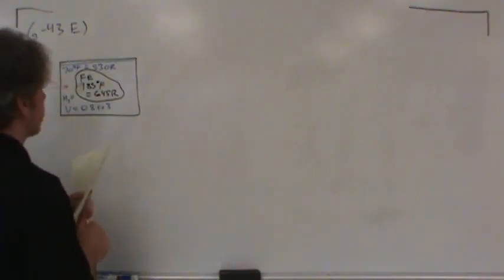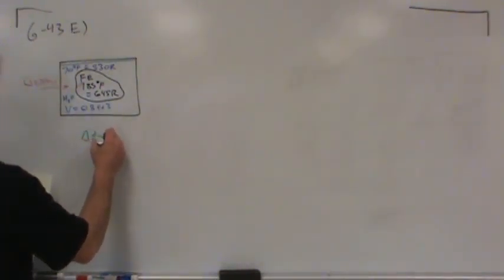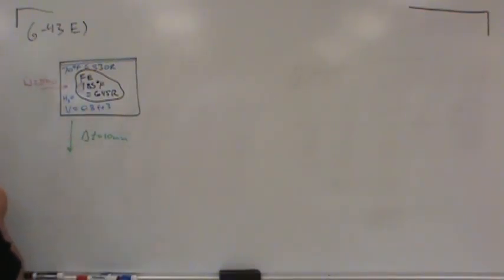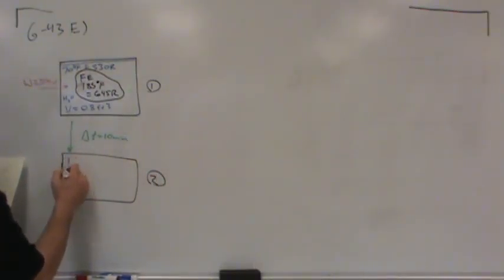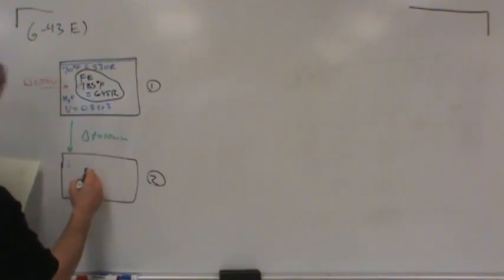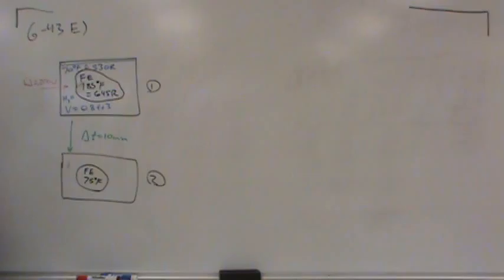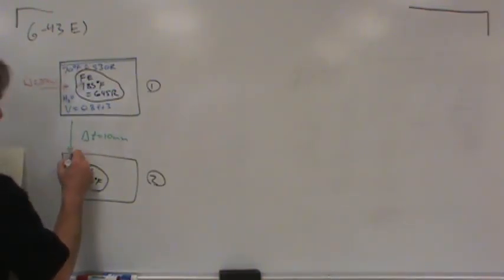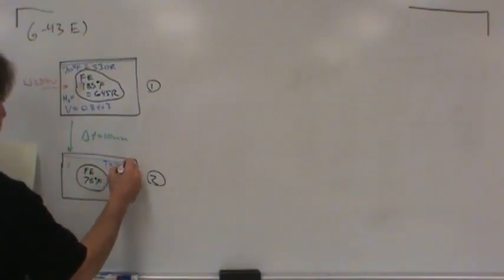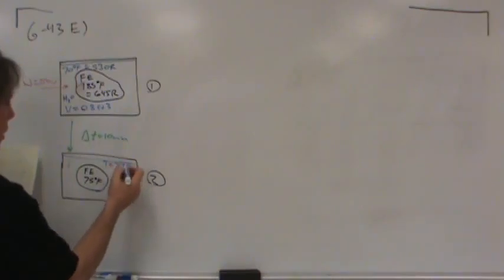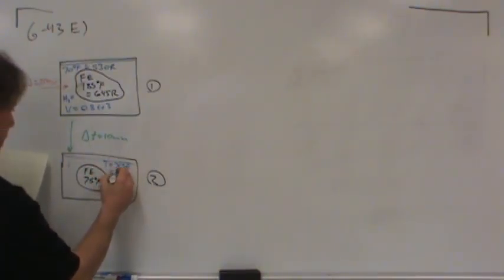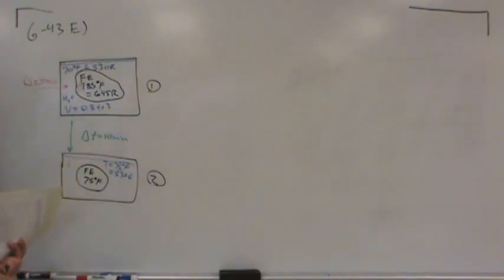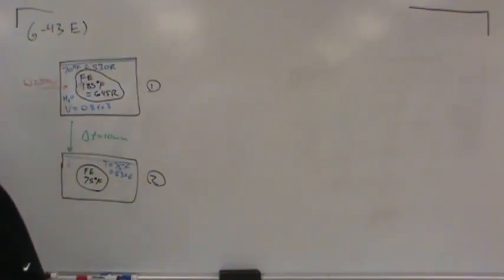Ten minutes elapses before thermal equilibrium is reached, moving from state 1 to state 2. In state 2, the iron is at 75 degrees Fahrenheit and the water is at the same temperature — they're both in thermal equilibrium. That temperature of 75 degrees Fahrenheit equals 535 Rankine. The iron lost energy and the water gained energy.